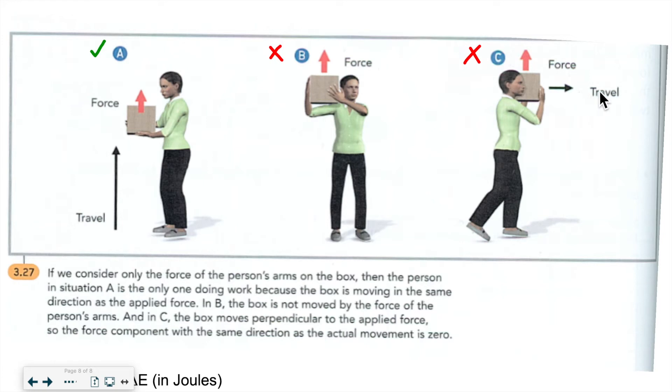So the travel goes this way but the force is upwards - they are not in the same direction, so this is not an example of work. Again, work implies that the force and the movement of the object both have to be in the same direction. That's the only time the concept of work will apply. So we're talking about effective force and movement in the same direction.